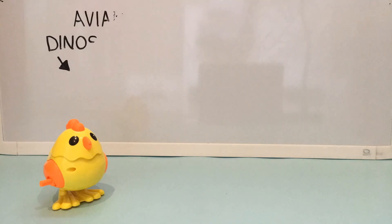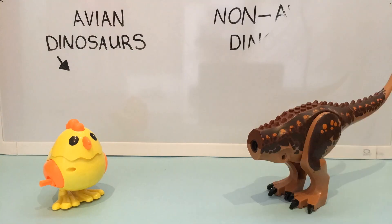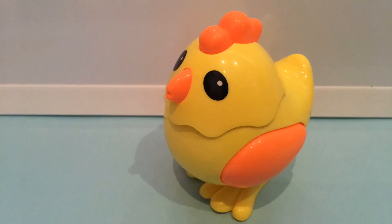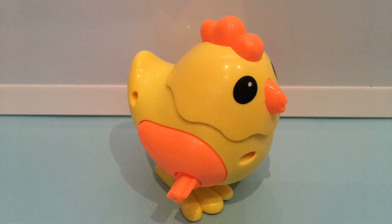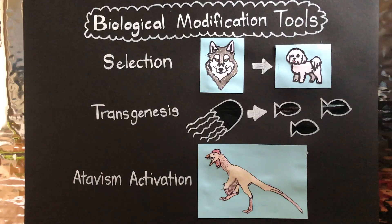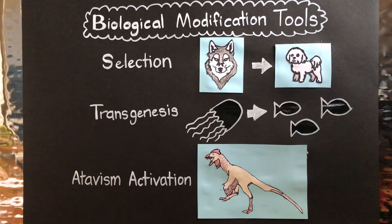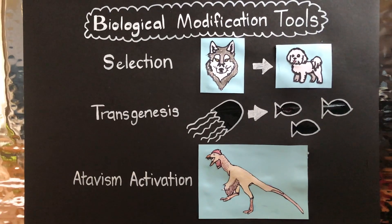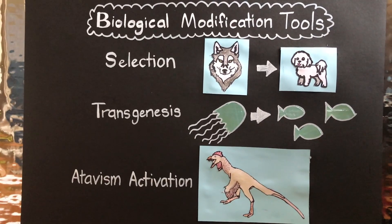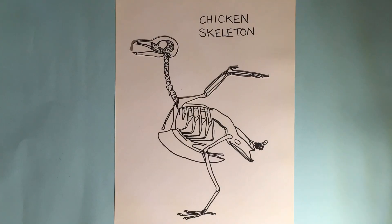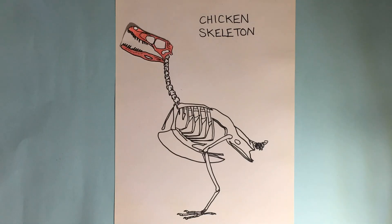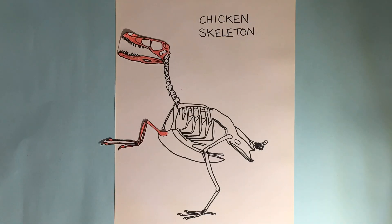Birds are now classified as avian dinosaurs because of how similar they are to non-avian dinosaurs. Just because a chicken is classified as an avian dinosaur doesn't mean it looks anything like a velociraptor. Scientists can use biological modification tools like selection, transgenesis, and atavism activation to change the way a chicken looks. Atavism activation is a process which turns on or off certain ancestral traits in the DNA strand.